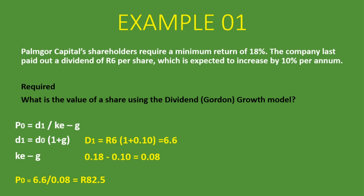Remember the point mentioned at the beginning — you can compare this to the actual market price of the share. For instance, if the actual market price is 75 rand, you can see the calculated value of R82.50 is higher. So the share is undervalued because it's trading at 75 rand but the dividend growth model gives R82.50 — you'd invest in that company. But if the market price is higher than R82.50, then the share is overvalued.